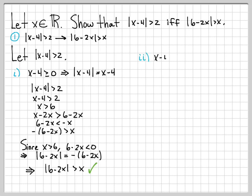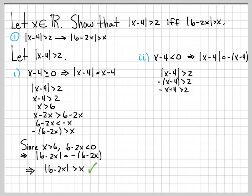Now we need to handle the case where x minus 4 is less than 0. When x minus 4 is a negative number, the absolute value of x minus 4 equals the negative of that quantity, so absolute value of x minus 4 equals negative quantity x minus 4. Starting again from our assumption, absolute value of x minus 4 greater than 2, and since x minus 4 is less than 0, we replace the absolute value with negative of x minus 4. Distributing gives negative x plus 4, and subtracting 4 from both sides gives negative x is greater than negative 2.